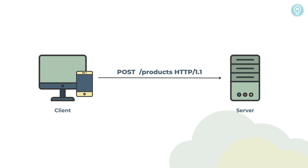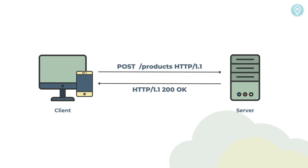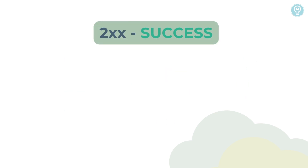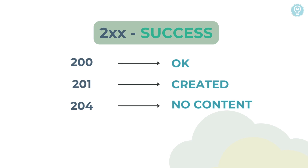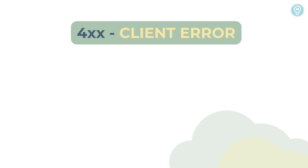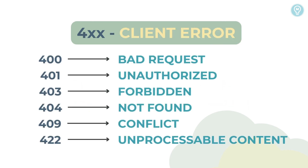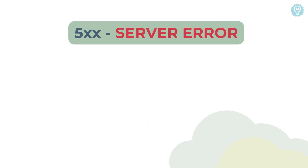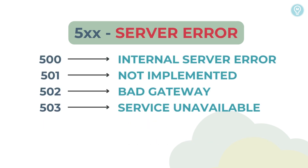The server receives the request, processes it, and formats the result into a response. Responses contain an HTTP status code informing the client what happened to the request. The most used HTTP status codes are the 200s, which indicate that the request was successful; the 400s, which indicate an error caused by the client; and the 500s, which indicate an error caused on the server.